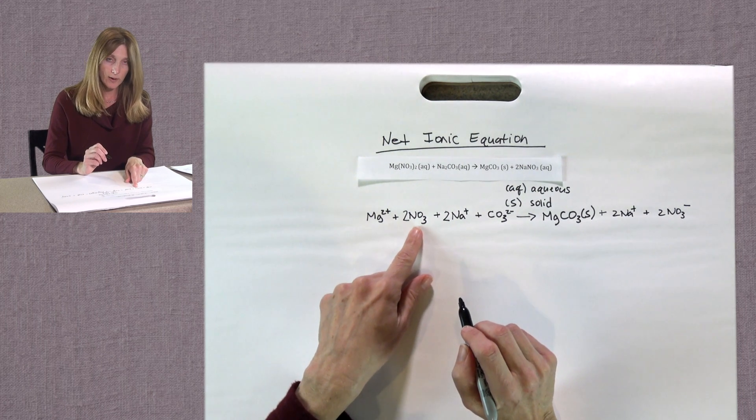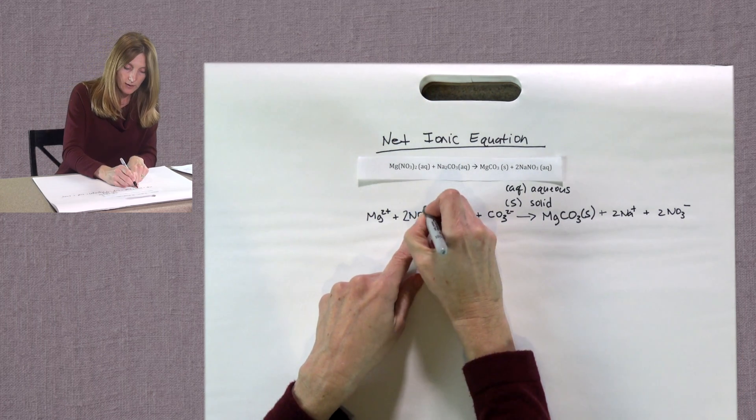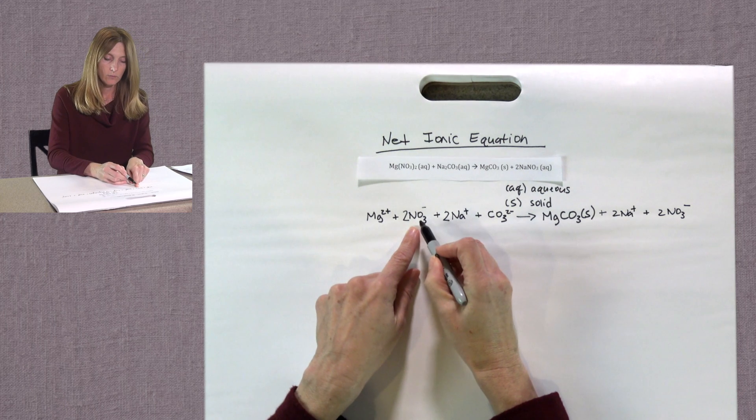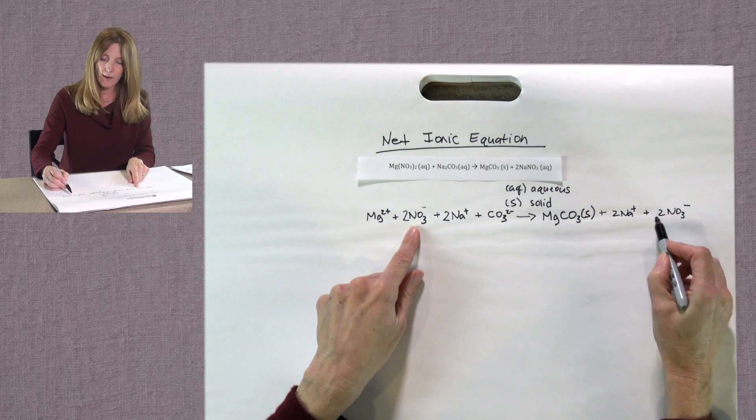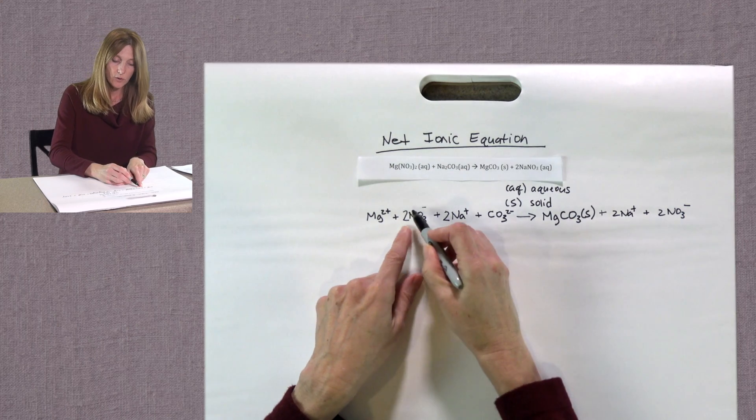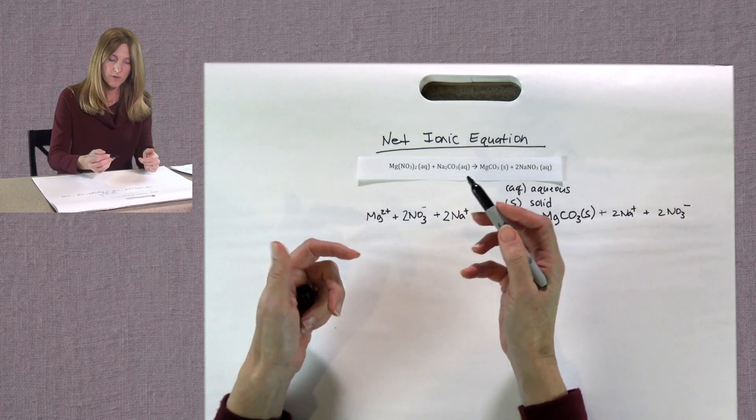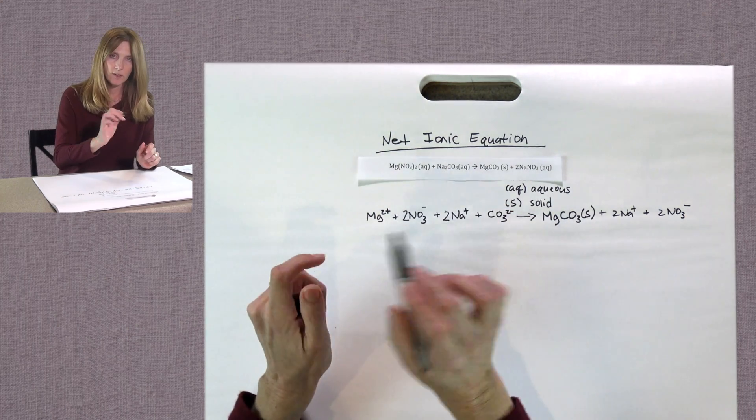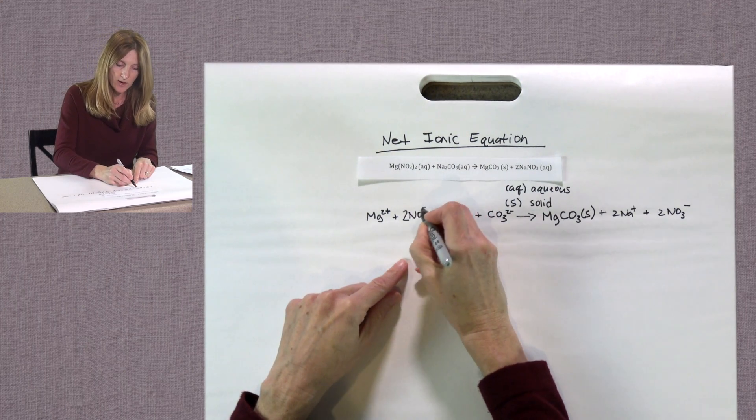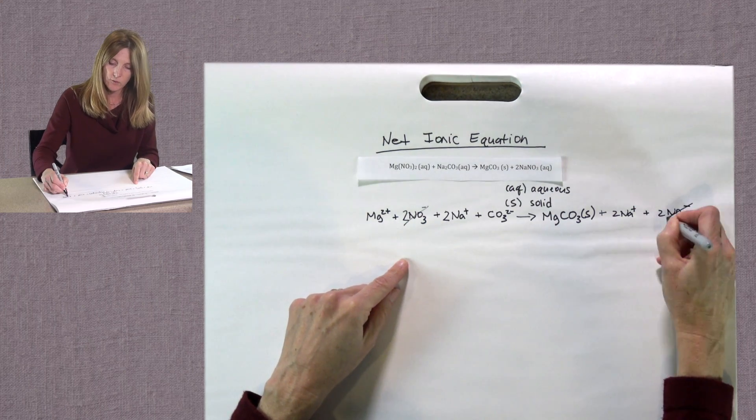How about nitrate? We've got the nitrate ion on the reactant side. We also have the nitrate ion on the product side. So you can remember one of the mathematic principles, anything that's shown on either side of the equation, you can subtract. So we can get rid of our nitrate ions.